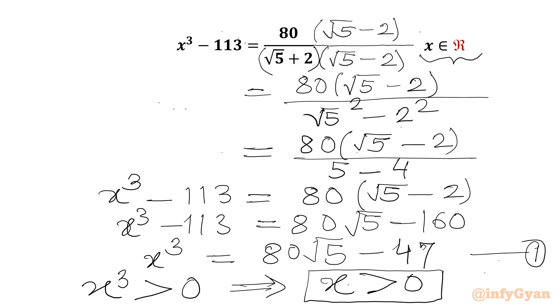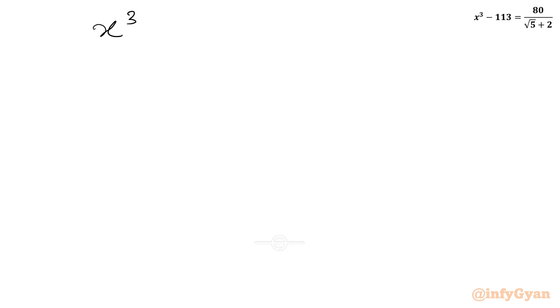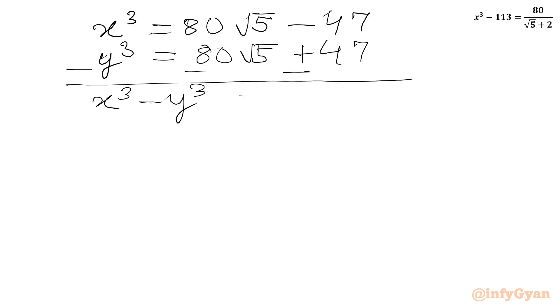Now I will write x cube equation here: 80 root 5 minus 47. Let us consider y cube which is conjugate of x cube: 80 root 5 plus 47. Let us subtract second equation from first one. We will get x cube minus y cube. This will be equal to minus 47 minus 47 minus 94. Let us say this is equation 1.